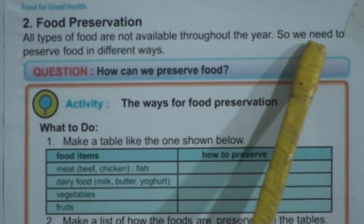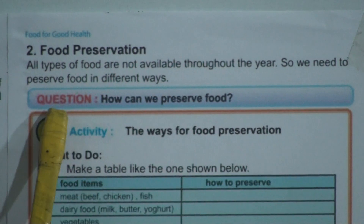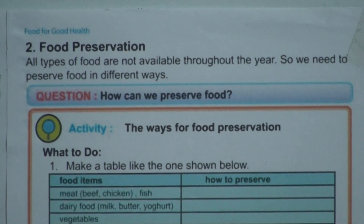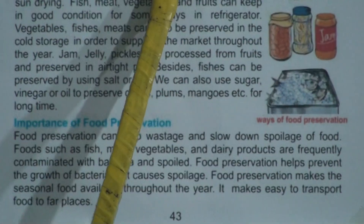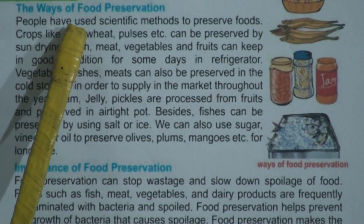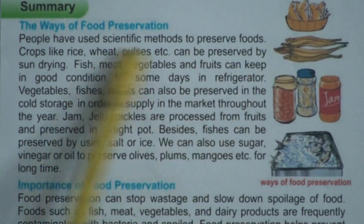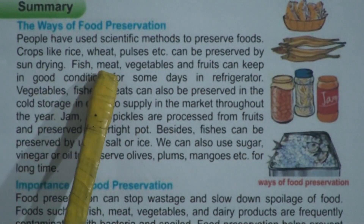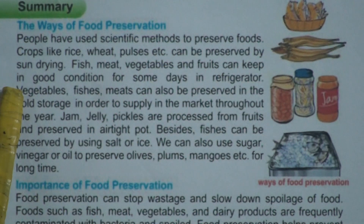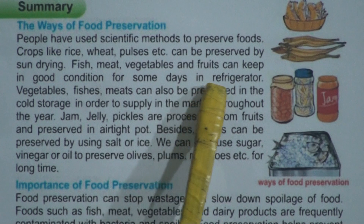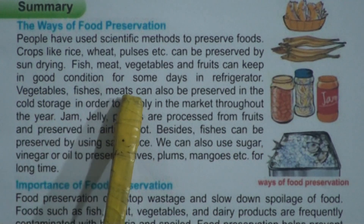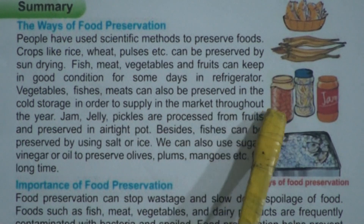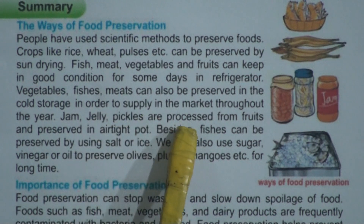All types of food are not available throughout the year, so we need to preserve food in different ways. The question arises: how can we preserve food? People have used scientific methods to preserve foods. Crops like rice, wheat, pulses, etc. can be preserved by sun drying. Fish, meat, vegetables, and fruits can be kept in good condition for some days in a refrigerator. Vegetables, fishes, and meats can also be preserved in cold storage in order to supply them to the market throughout the year.